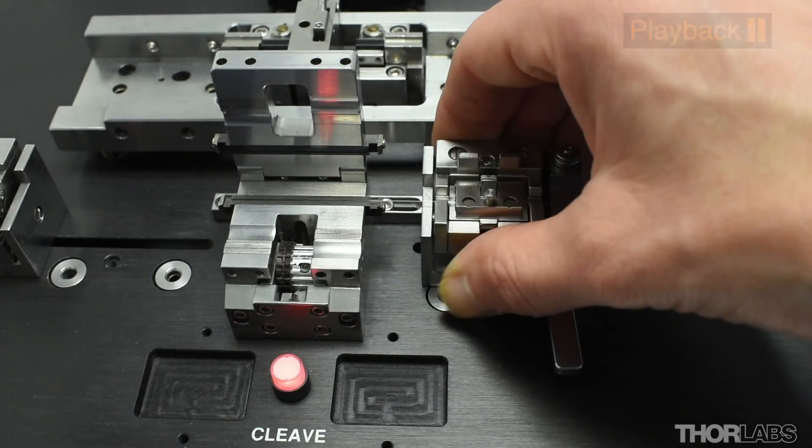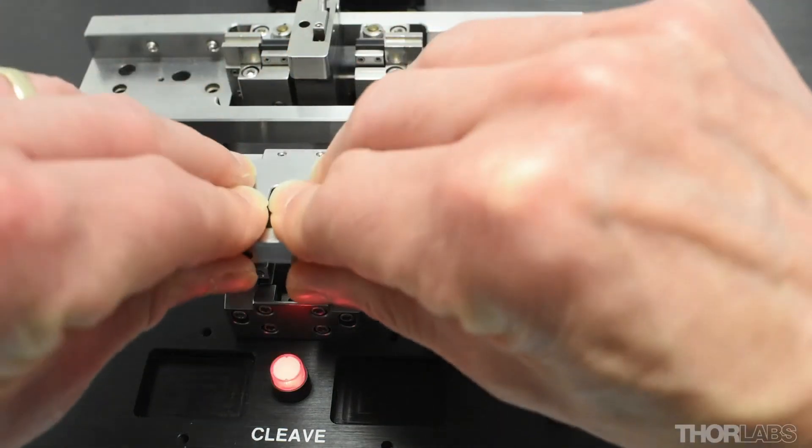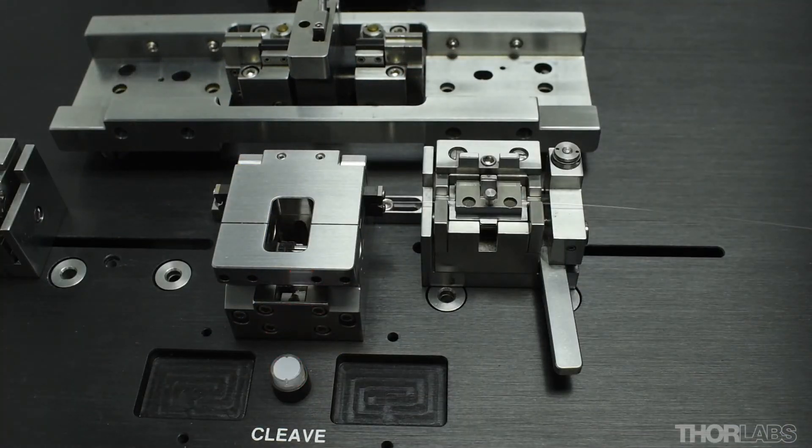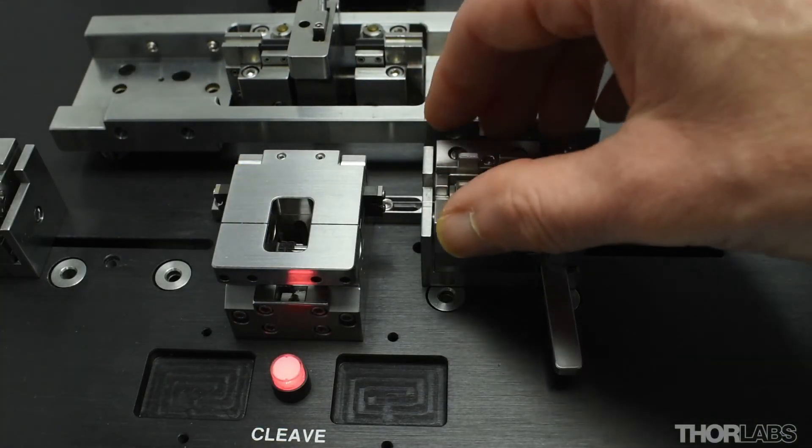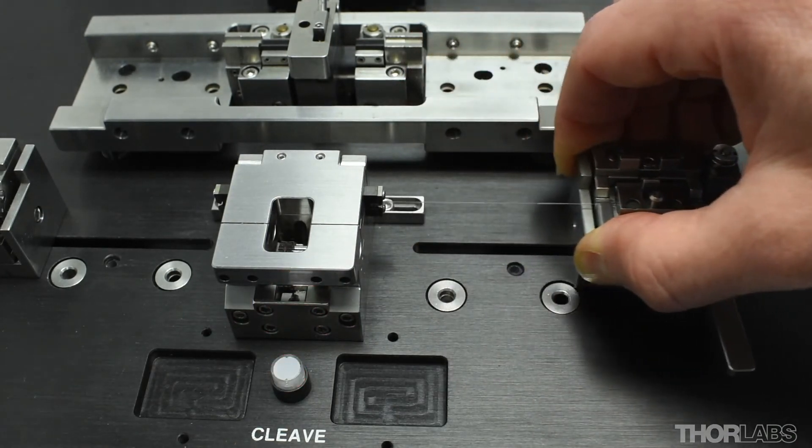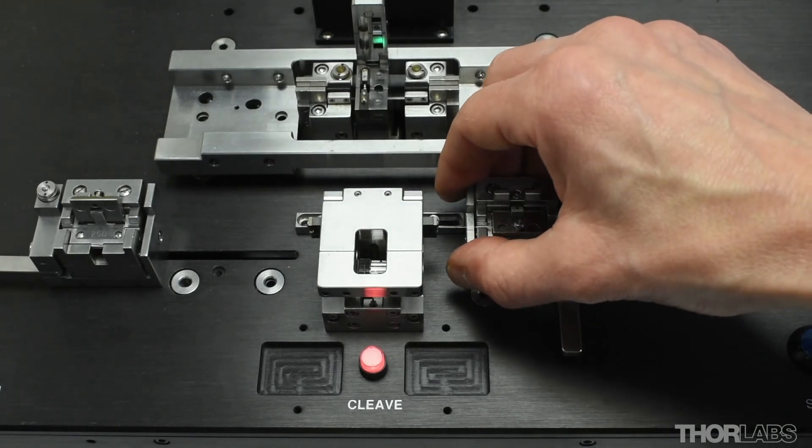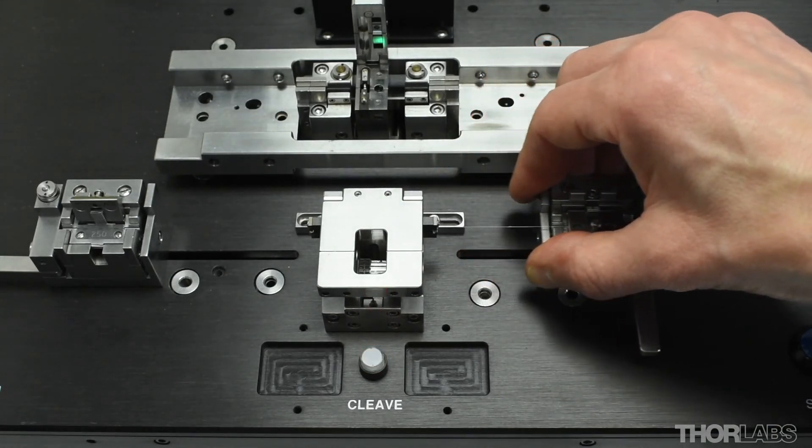To strip the fibre, move the fibre holding block fully along the stripping slot. The vacuum will activate to capture the fibre in the strip insert and the temperature of the inserts will also increase. Gently close the lid of the stripping block. Wait for the indicator light to become steady. And then, while applying a slight downward force on the fibre holding block, slide it backwards in the stripping slot in a smooth steady action. This will pull the softened fibre coating through the strip blades and remove it.